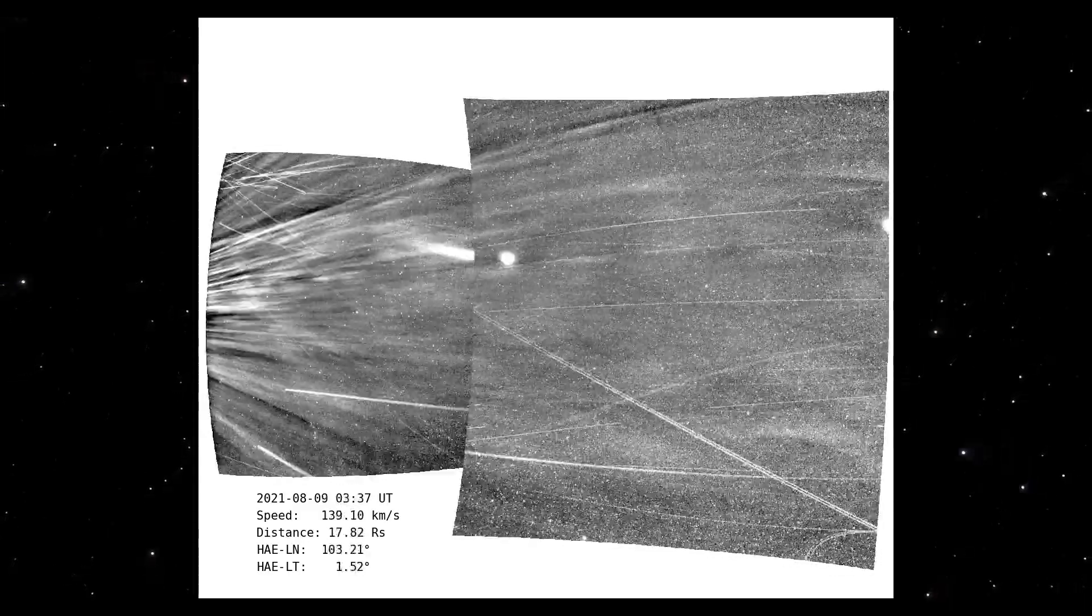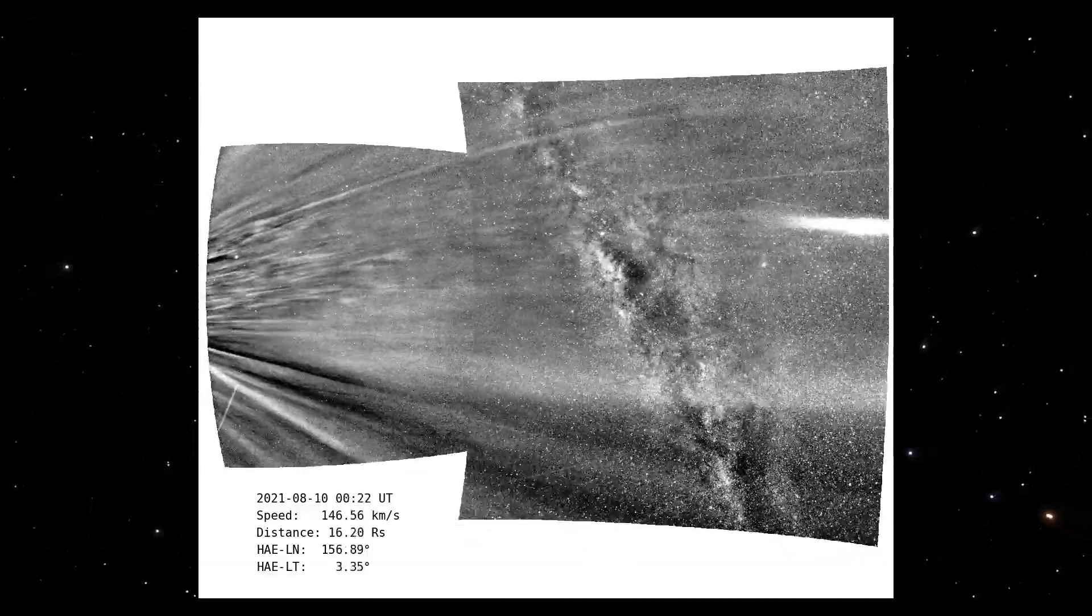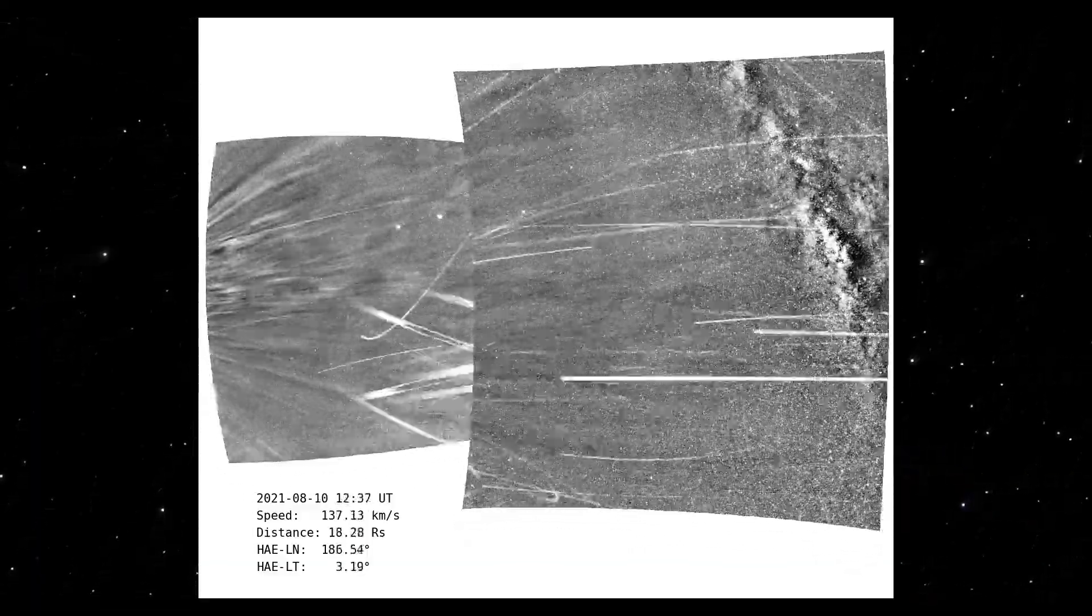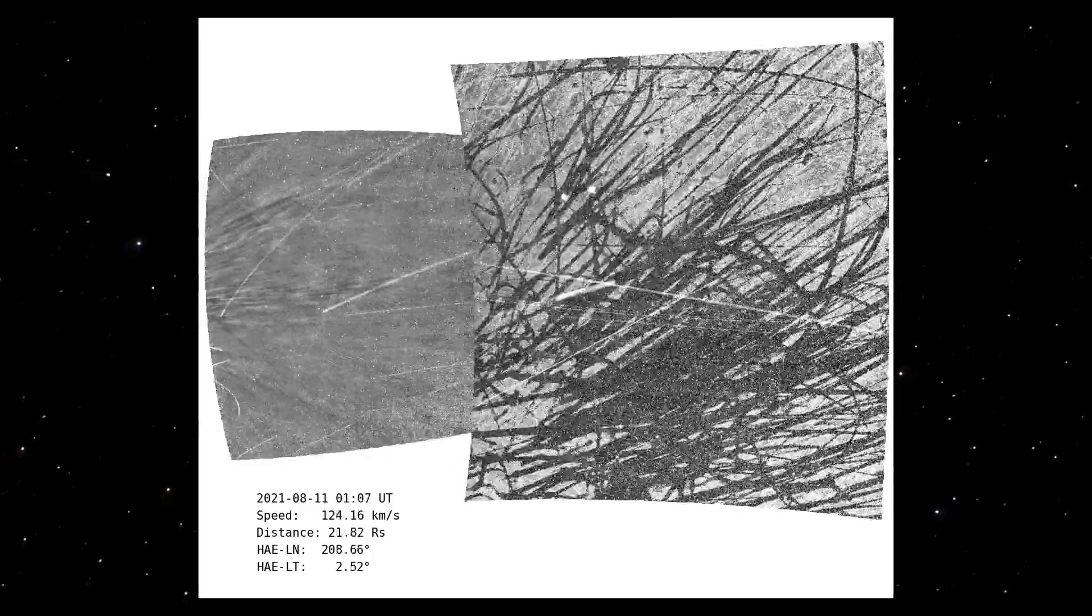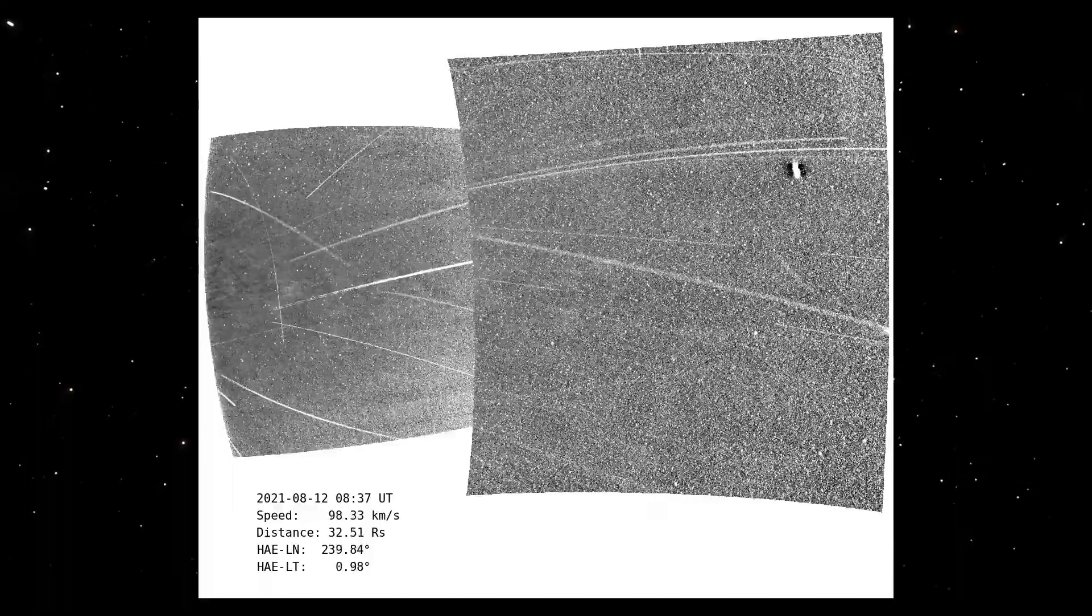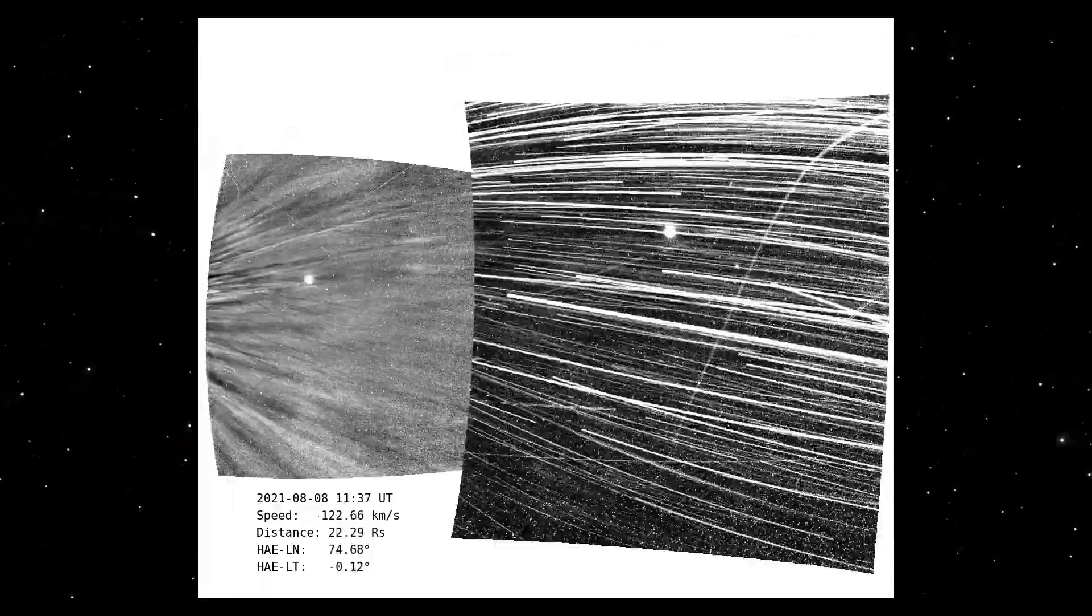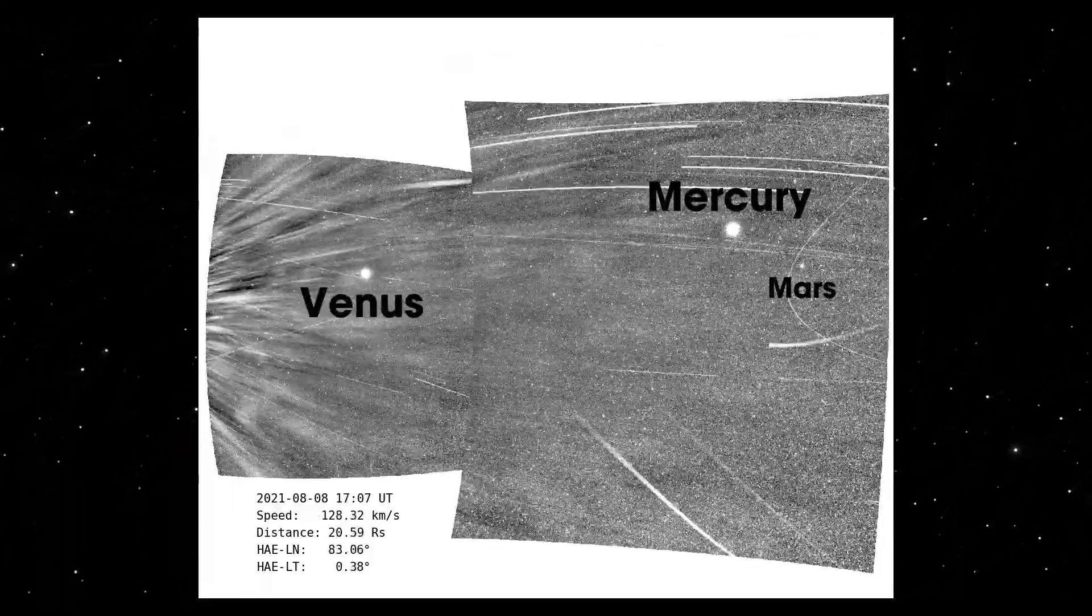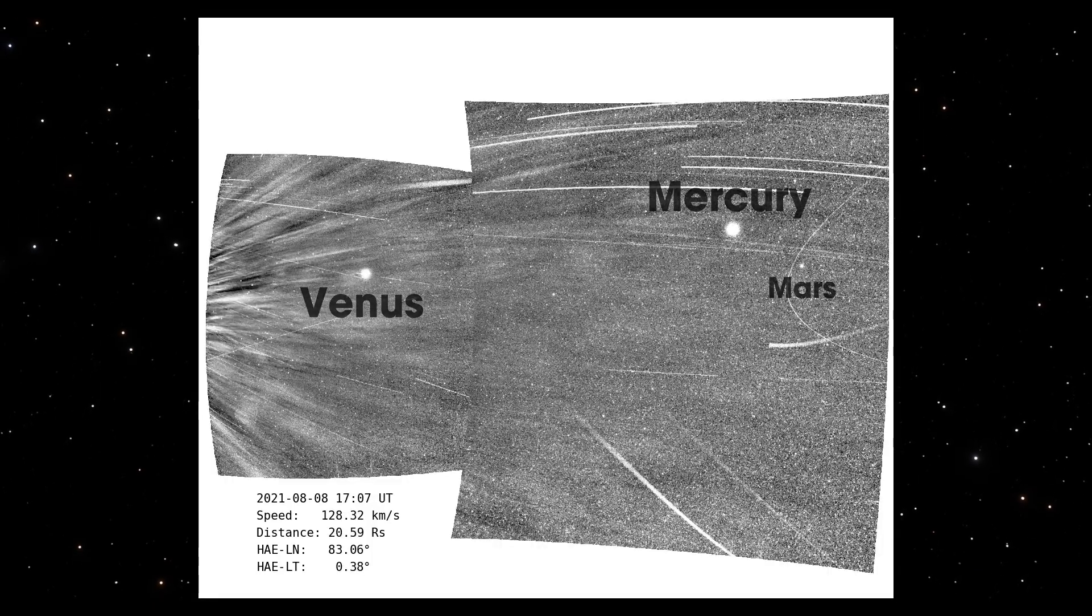We're not done with this video yet. Believe it or not, there are also planets visible in the background, including Earth. NASA itself hasn't exactly identified the planets, but there are assumptions online made by astrophysicists. First, we see Venus, Mercury and Mars.